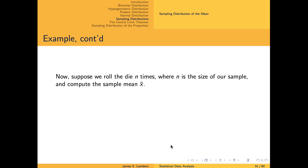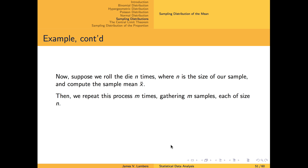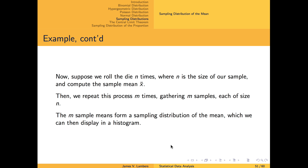To obtain our sampling distribution of a mean, we select a sample size n, roll the die n times, and take the average of all n outcomes, which we denote by x-bar. If we repeat this process m times to obtain m sample means, we can visualize the sampling distribution of a mean by displaying these sample means in a histogram.